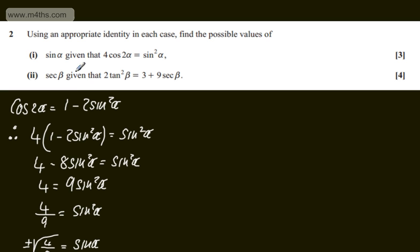Let's look at this one: sec β given that 2tan²β equals 3 plus 9sec β. Let's write an identity. tan²β plus 1 equals sec²β. Therefore, we can write that tan²β equals sec²β minus 1.